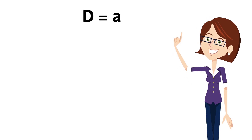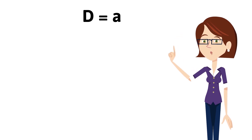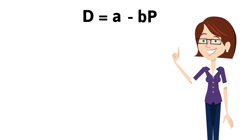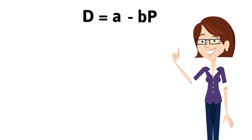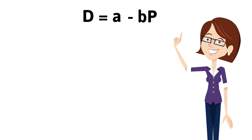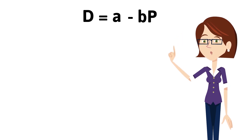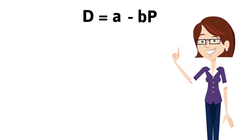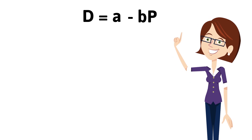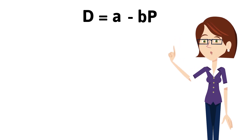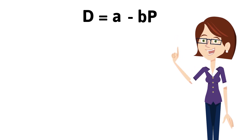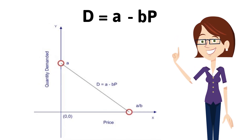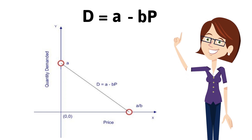When the value of P increases, the value of D falls, and when the value of P decreases, the value of D rises. This gives rise to a downward sloping straight line.